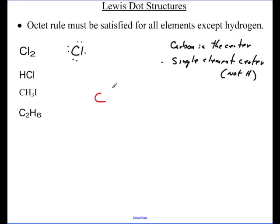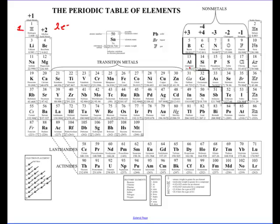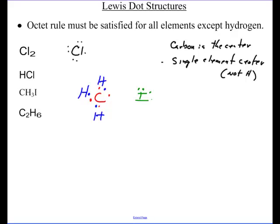Carbon has 4 valence electrons. Then I have hydrogen with its one valence electron — I'll bring that in. Here's another hydrogen with one valence electron, and another — they're making bonds. Last but not least, iodine is a halogen, so it has 7 valence electrons: one, two, three, four, five, six, seven. I'll bring that in and there's CH3I.